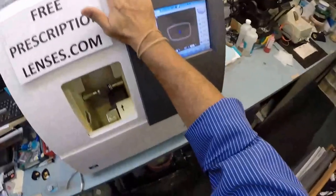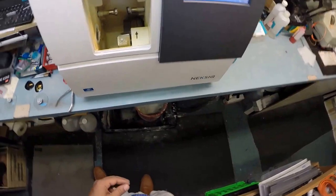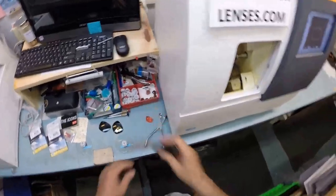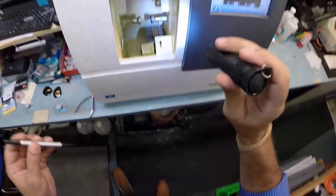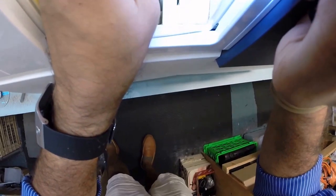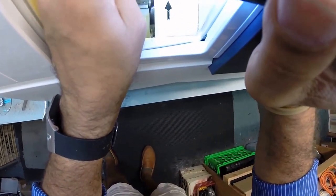This is the actual edger. This costs $40,000 and weighs 200 pounds. I recommend everyone go out and buy their own. The cutting wheel is on the far right. It acts like heavy grit sandpaper. The wheel in the center puts the bevel onto the lens so it stays inside the frame.